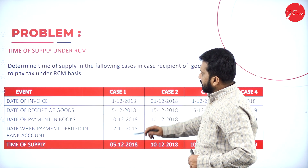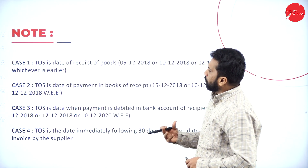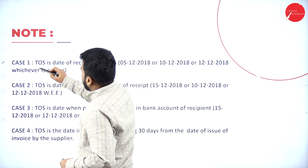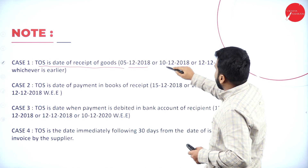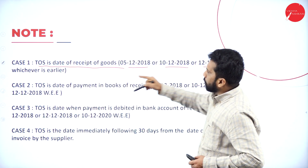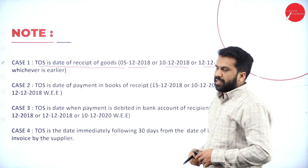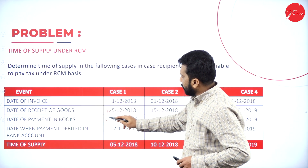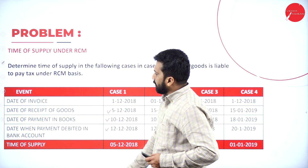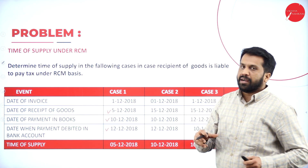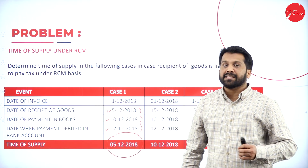For Case 1 under RCM: we do not consider the date of invoice. We compare date of receipt of goods (5-12-18), date of payment (10-12-18), and date when payment is debited in books (12-12-18). Whichever is earlier — 5-12-18 is earlier — so the time of supply is 5th December 2018, which is the date of receipt of goods.